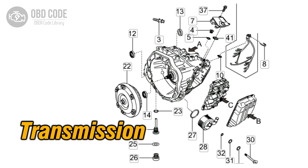The P0730 trouble code indicates that the transmission has detected an incorrect gear ratio. This code is typically found in vehicles with automatic transmissions. The ECM or TCM monitors the transmission's gear ratios to ensure they are within the expected parameters. If the actual gear ratio does not match the expected value for a particular gear,